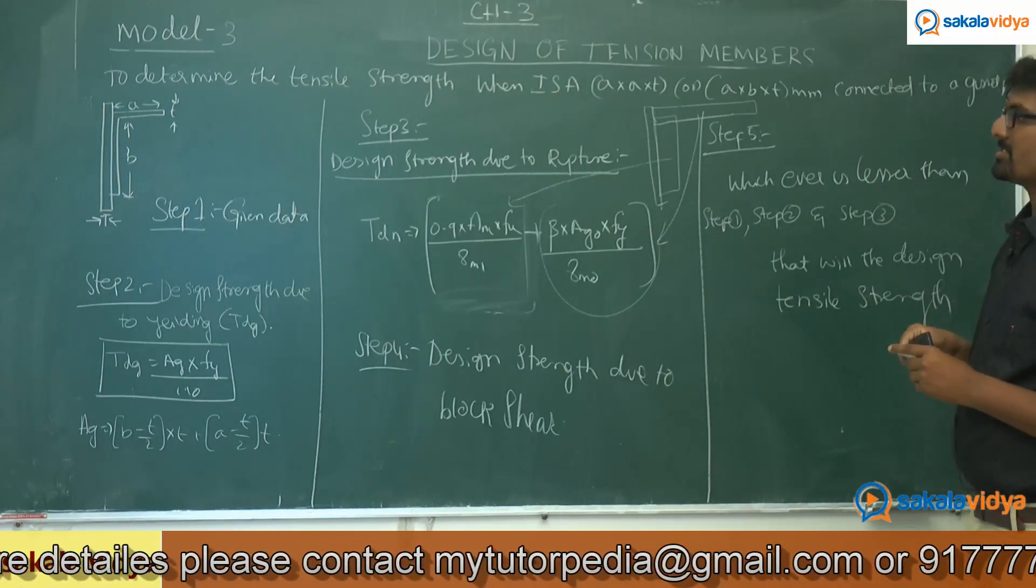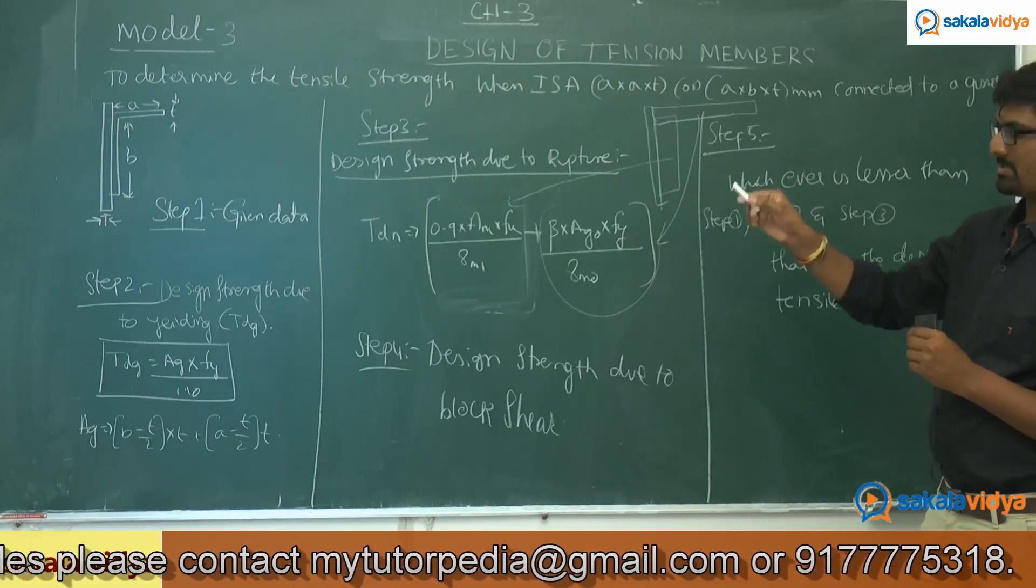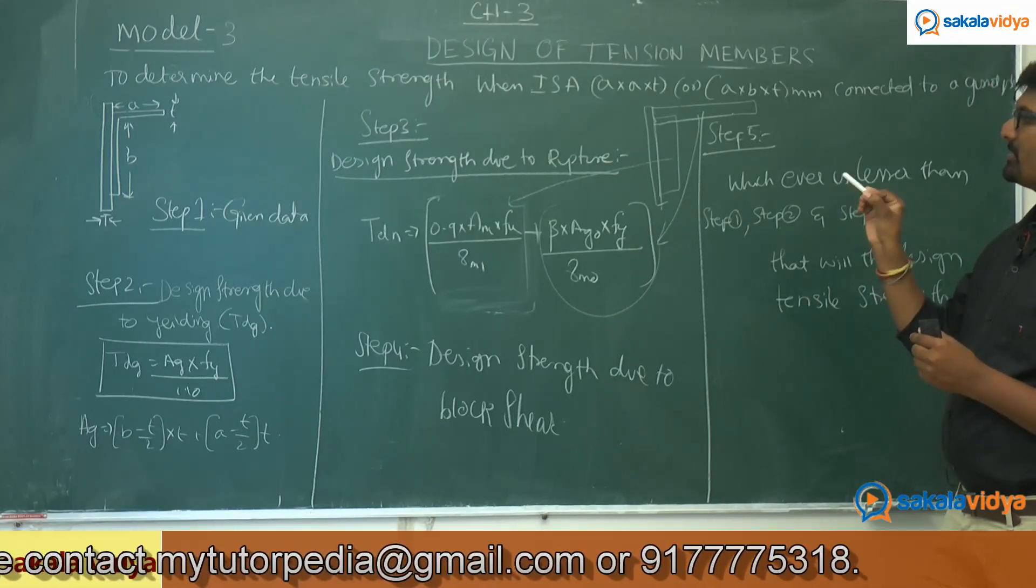So in order to calculate the design tensile strength of ISA, we need to follow all the steps: step 2, step 3, step 4. Design strength due to yielding or gross yielding, design strength due to rupture, design strength due to block shear.